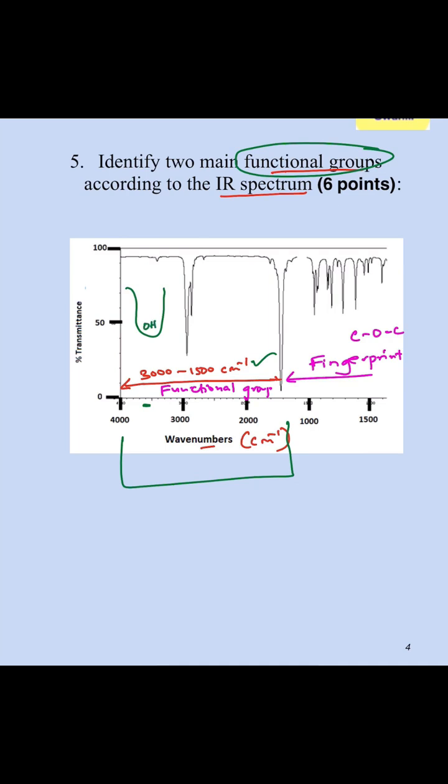If you see around the same area, slightly maybe lower, around 3400, you see something that's like that medium intensity, that's going to be NH. NH2 will split into two.